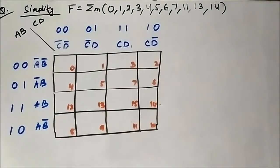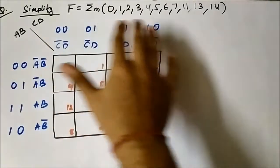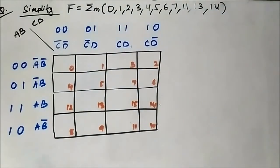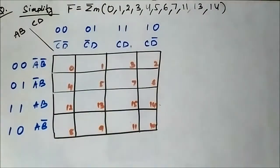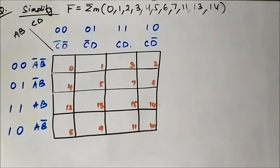This is the fifth question on 4-variable KMAP. The boolean expression is given in terms of the minterm values 0, 1, 2, 3, 4, 5, 6, 7, 11, 13, and 14.